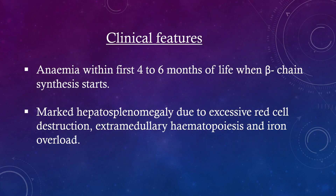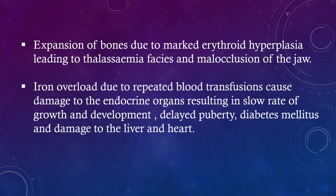Clinical features: anemia within the first 4-6 months of life when beta chain synthesis starts; marked hepatosplenomegaly due to excessive red cell destruction; extramedullary hematopoiesis and iron overload; expansion of bones due to marked erythroid hyperplasia leading to thalassemia facies and malocclusion of the jaw; iron overload due to repeated blood transfusions causing damage to endocrine organs, resulting in slow rate of growth and development, delayed puberty, diabetes mellitus, and damage to the liver and heart.